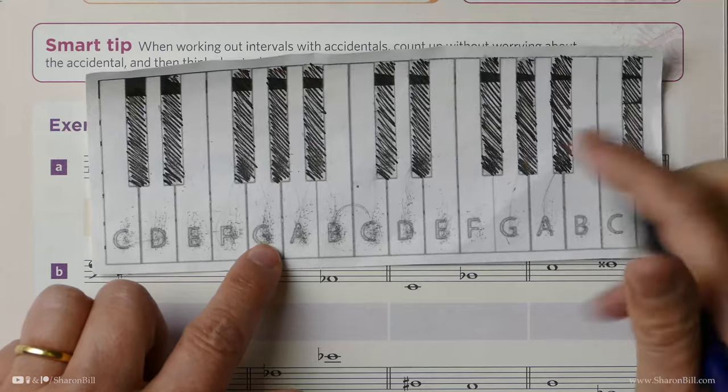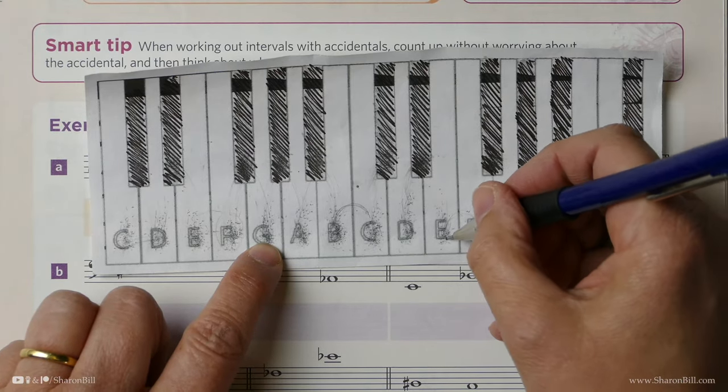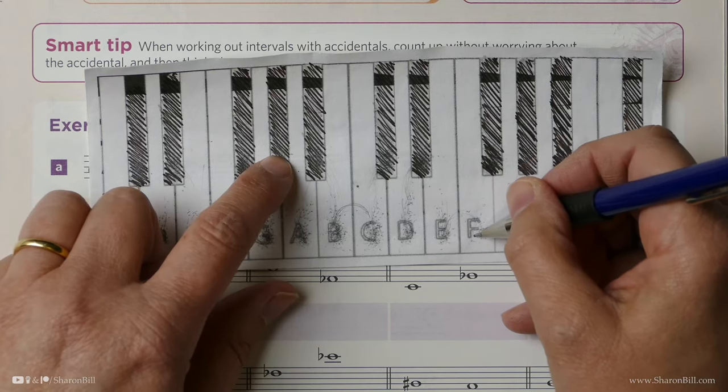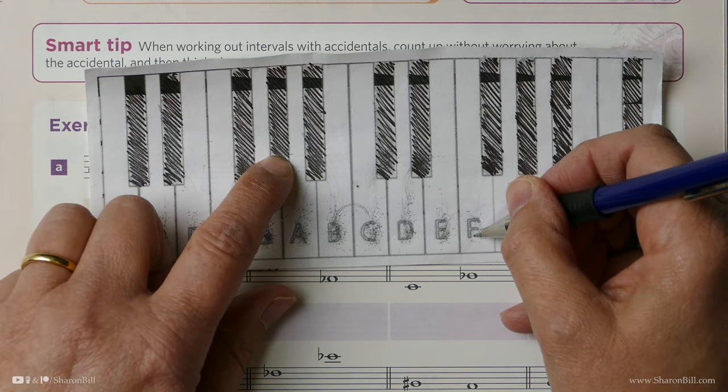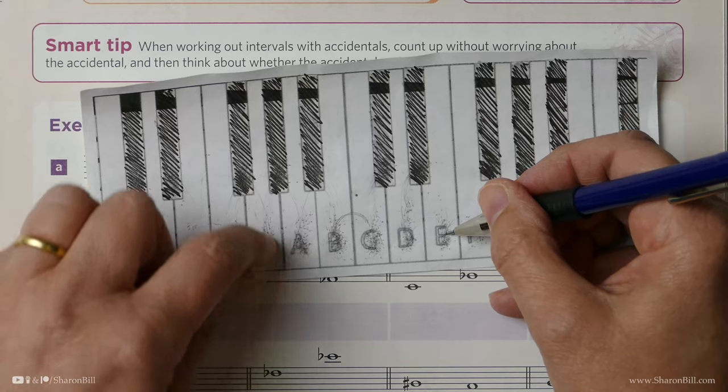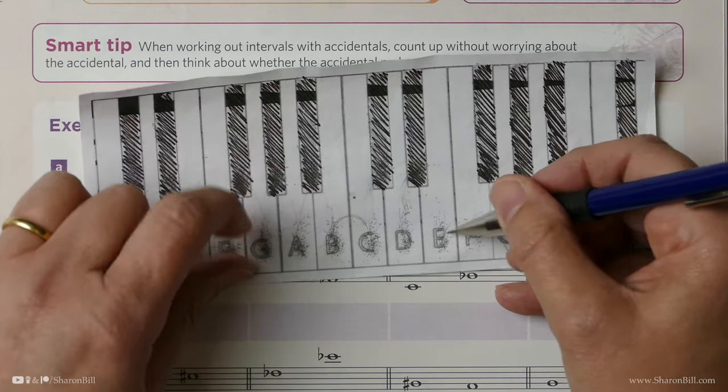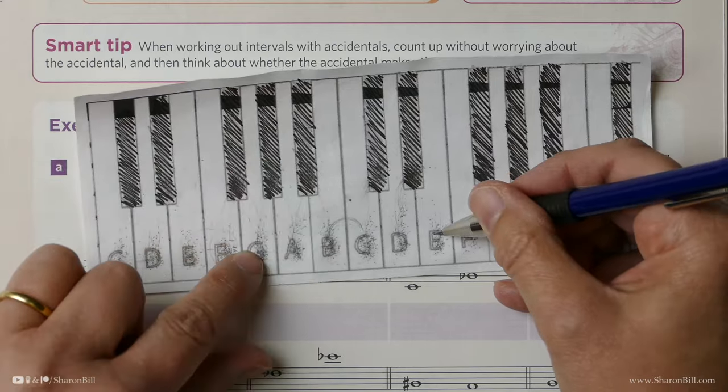If we start, we know that G to E is a major sixth. And so parallel movement, G sharp to E sharp, is also a major sixth. So it's the same distance. We've just parallel moved it up a semitone. If both notes have moved, it's a parallel movement. It just helps to show it more clearly.